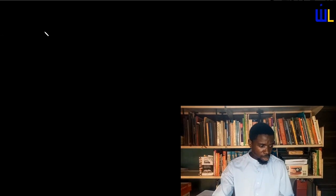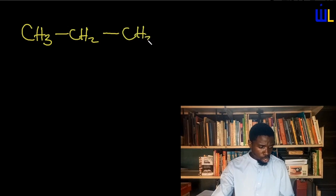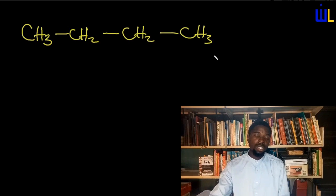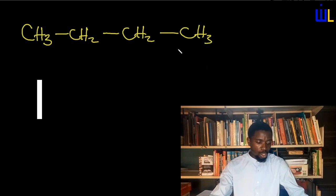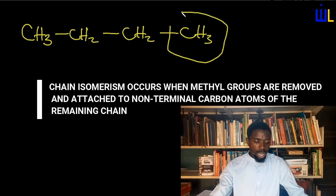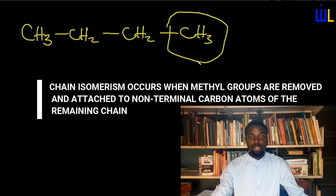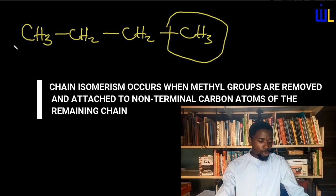Let's look at that and understand how it works. If you look at the screen, you'll notice that we start with butane. Butane is going to be structurally written as CH3–CH2–CH2–CH3. This is the least alkane that can exhibit chain isomerism. To exhibit chain isomerism, the first thing you need to do is cut out or remove the terminal carbon atom — that is, the carbon atom at the end of the chain. Once you remove the terminal carbon atom, or a methyl group, you have a remaining chain.